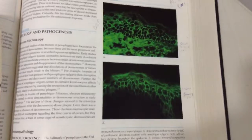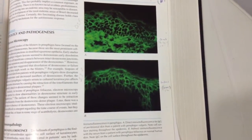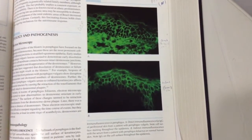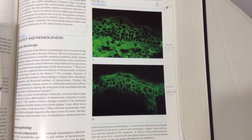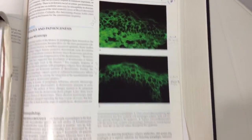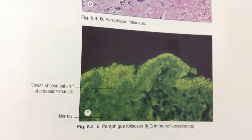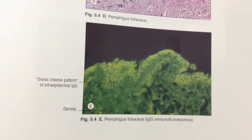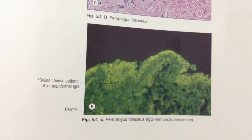We can see here the immunofluorescence of pemphigus: direct immunofluorescence from perilesional skin and indirect immunofluorescence. In pemphigus foliaceous, immunofluorescence shows the intraepidermal IgG pattern.